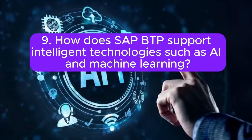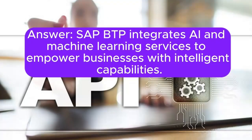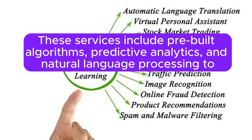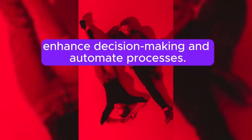Question 9: How does SAP BTP support intelligent technologies such as AI and machine learning? SAP BTP integrates AI and machine learning services to empower businesses with intelligent capabilities. These services include pre-built algorithms, predictive analytics, and natural language processing to enhance decision-making and automate processes.